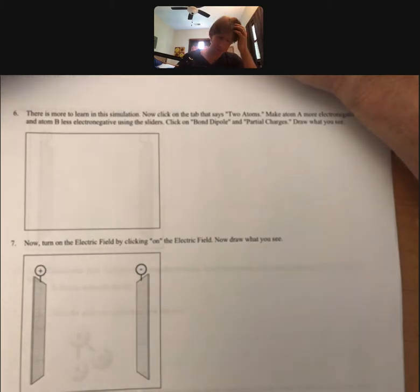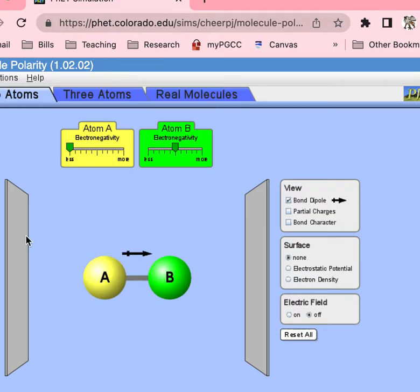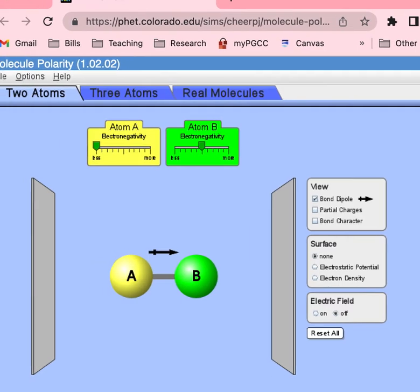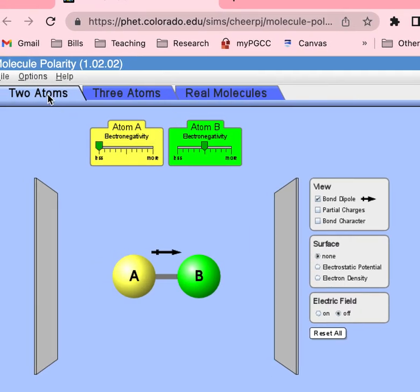The other parts of the simulation, you're going to click on the tab that says 'Two Atoms.' It's the same simulation, nothing to close. We're just going to click on 'Two Atoms' now, and I already did that.